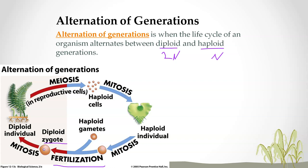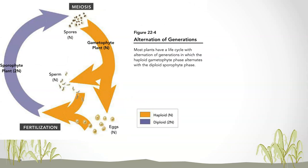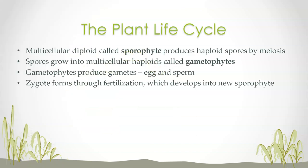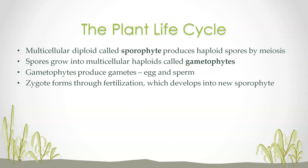Here's another picture of alternation of generations. There are key terms: gametophyte and sporophyte. Sperm and eggs combine in fertilization to produce a sporophyte, which is the 2N diploid stage. That sporophyte produces spores, which are haploid, and those haploid spores develop into the gametophyte. The multicellular diploid is called the sporophyte and produces haploid spores. The multicellular haploid is called the gametophyte. Gametophytes produce gametes — sex cells: eggs and sperm.